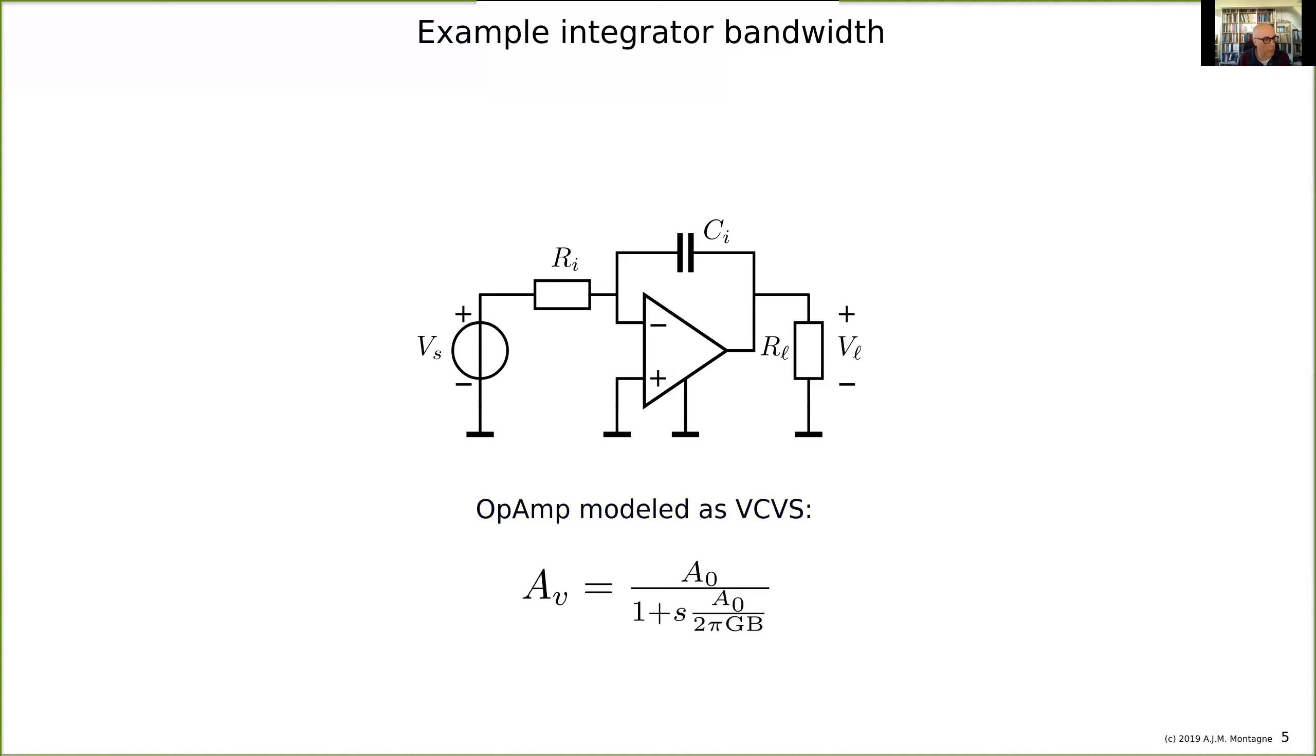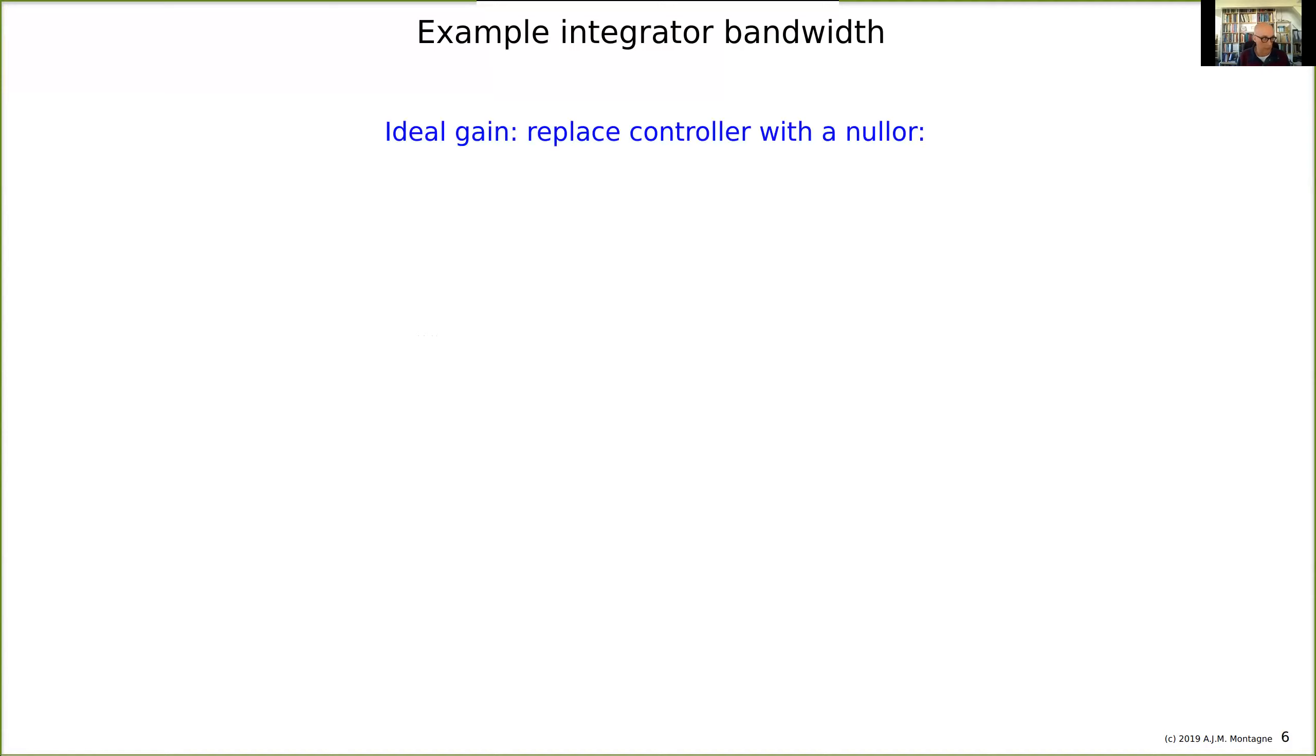The op amp will be modeled as a single pole op amp with one time constant and a DC gain A0. For the ideal gain, we replace the controller with a nullor and calculate the source to load response. This is an integrating characteristic: VL over VS equals minus one over S times RI times CI, the integration time constant.